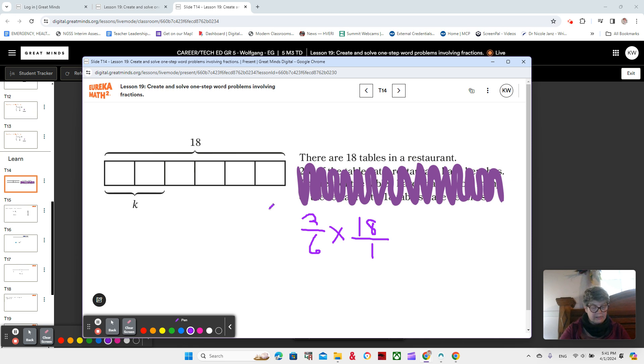Or what about 18 divided by 6, because there's 6 parts. Let's put that in parentheses so we know to do that first, times 2. Now why would we multiply that by 2? Because we have 2 parts. 18 divided by 6 is going to tell us 1 part, but K is indicating 2 parts.